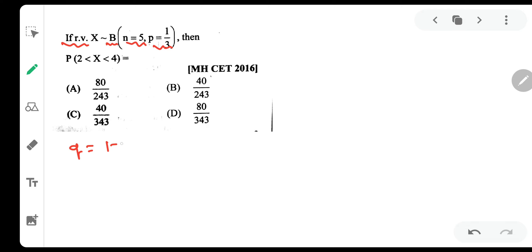So q will be equal to 1 minus 1 by 3, which is 1 minus p, 2 by 3. And they have asked us P of 2 is less than x is less than 4. Then what is the number which lies between 2 and 4?